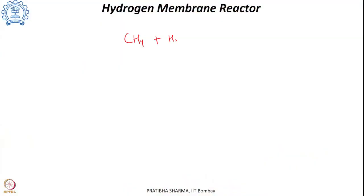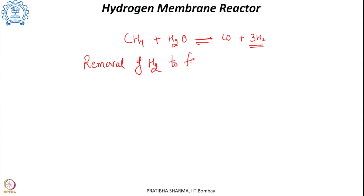Another method that can be looked at is the hydrogen membrane reactor. The principle behind it is the same — one of the products is selectively removed from the reforming reaction, and the product being removed is hydrogen in this case. Hydrogen which is being formed is removed such that the forward reaction could be favored, and that is done using certain membranes in a hydrogen membrane reactor. This removal of hydrogen to favor the forward reaction and address chemical equilibrium limitations is a shift effect, shifting the chemical equilibrium in the forward direction.